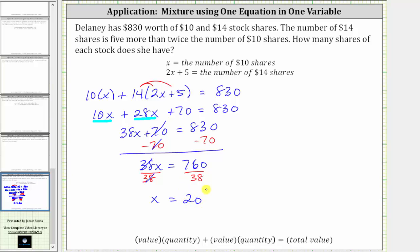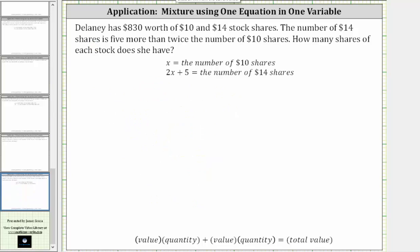Now that we know x is equal to 20, we can determine how many shares of each stock Delaney has. And let's do this on the next slide. Again, we just found x is equal to 20, so we know Delaney has 20 $10 shares.